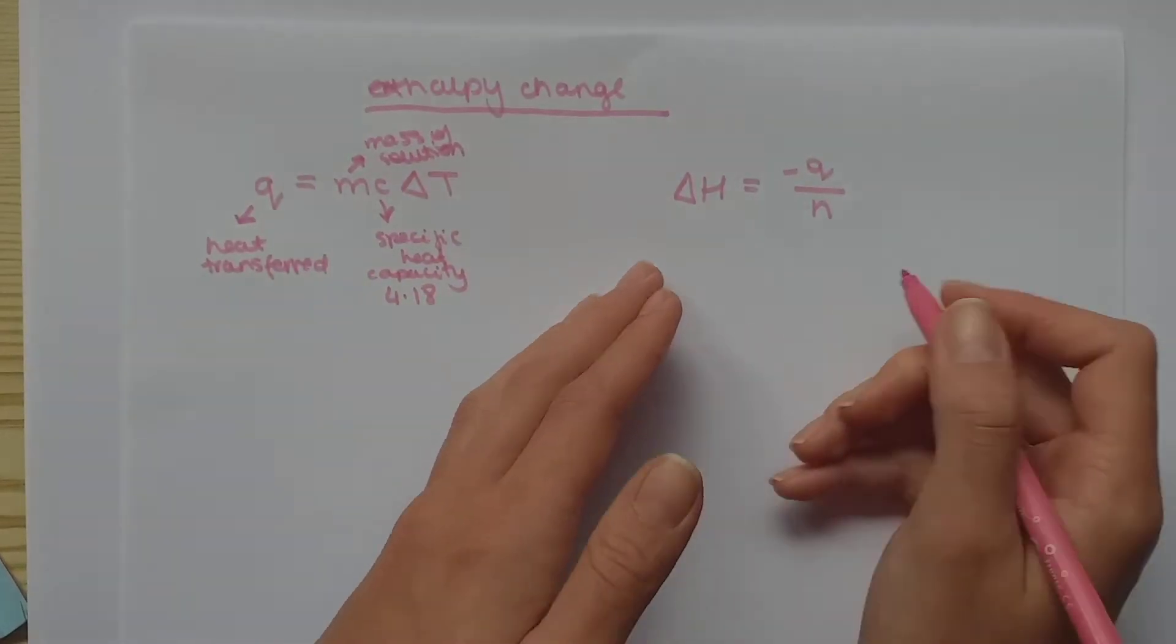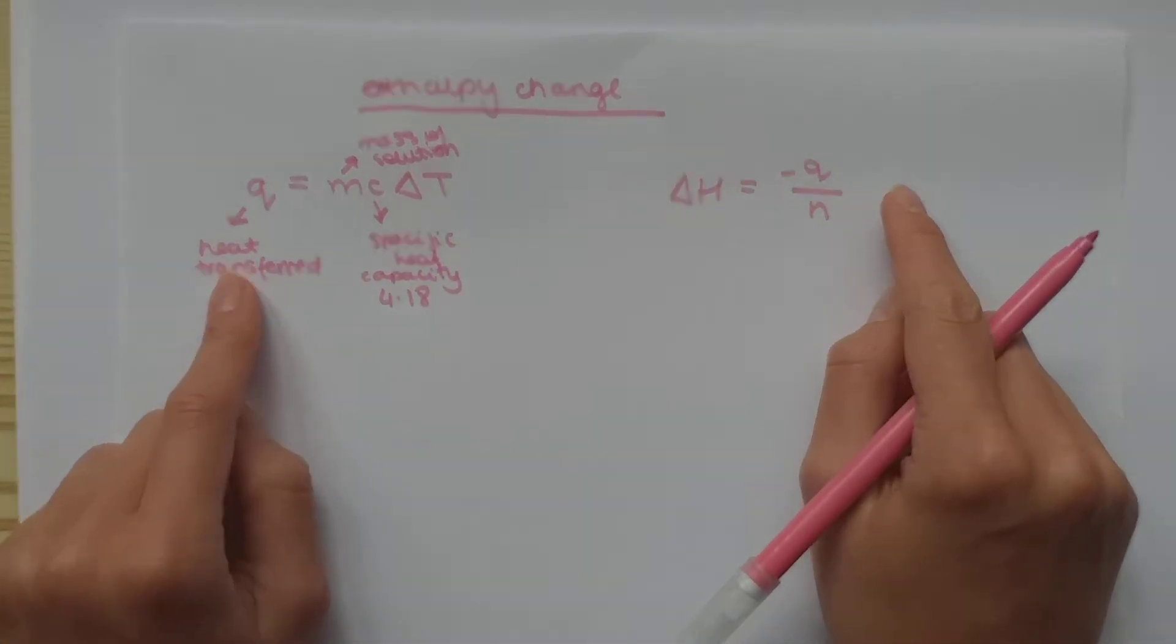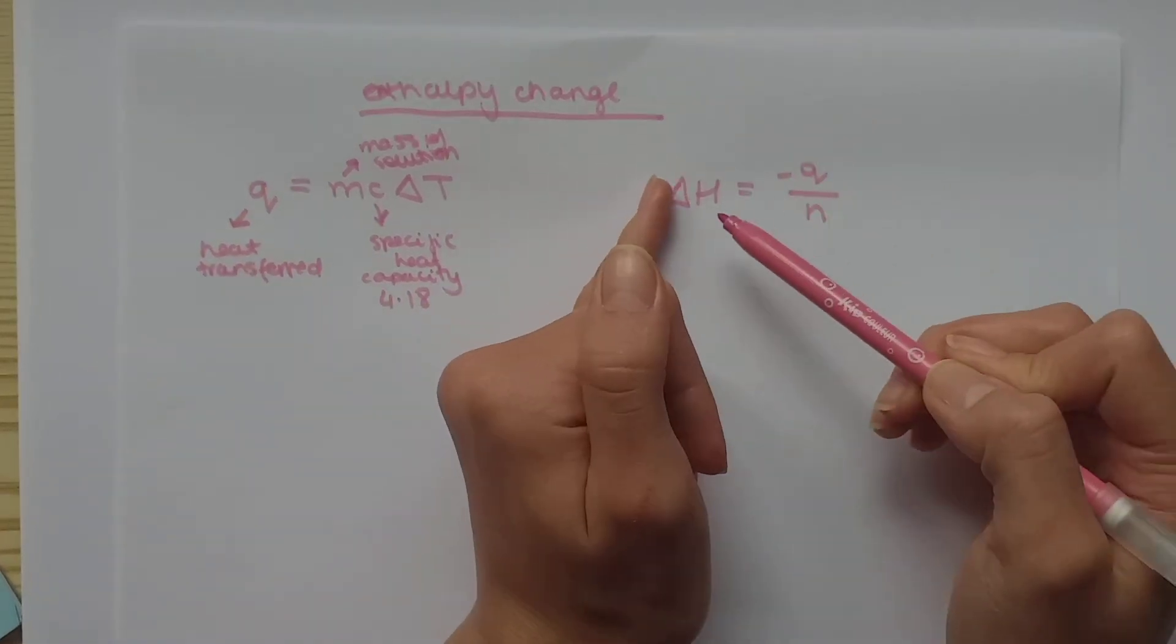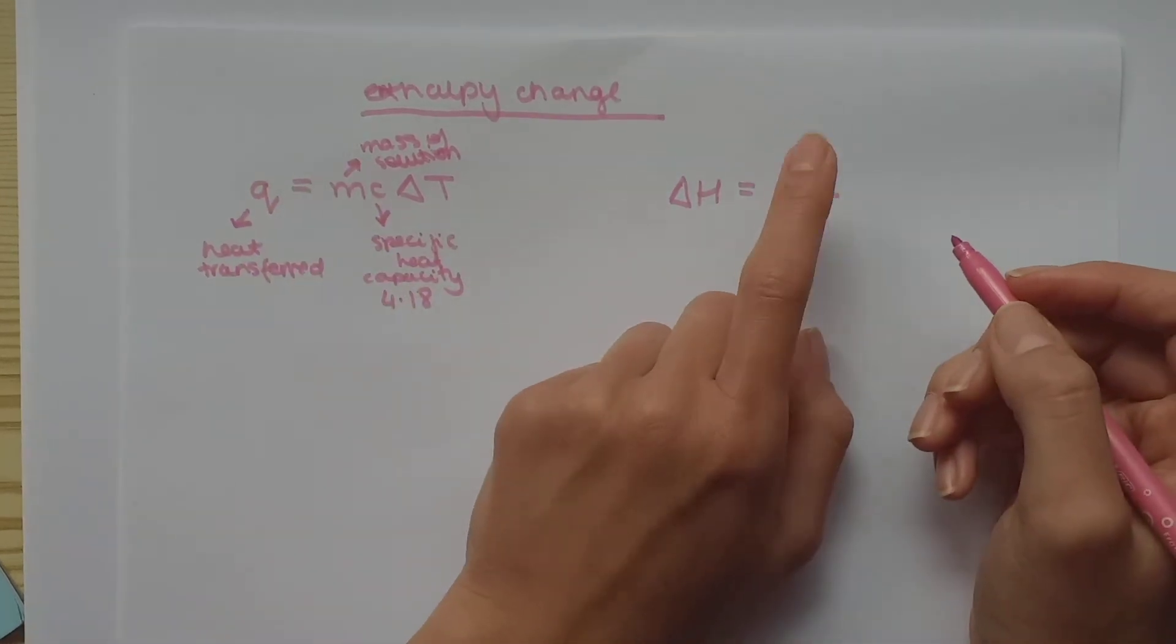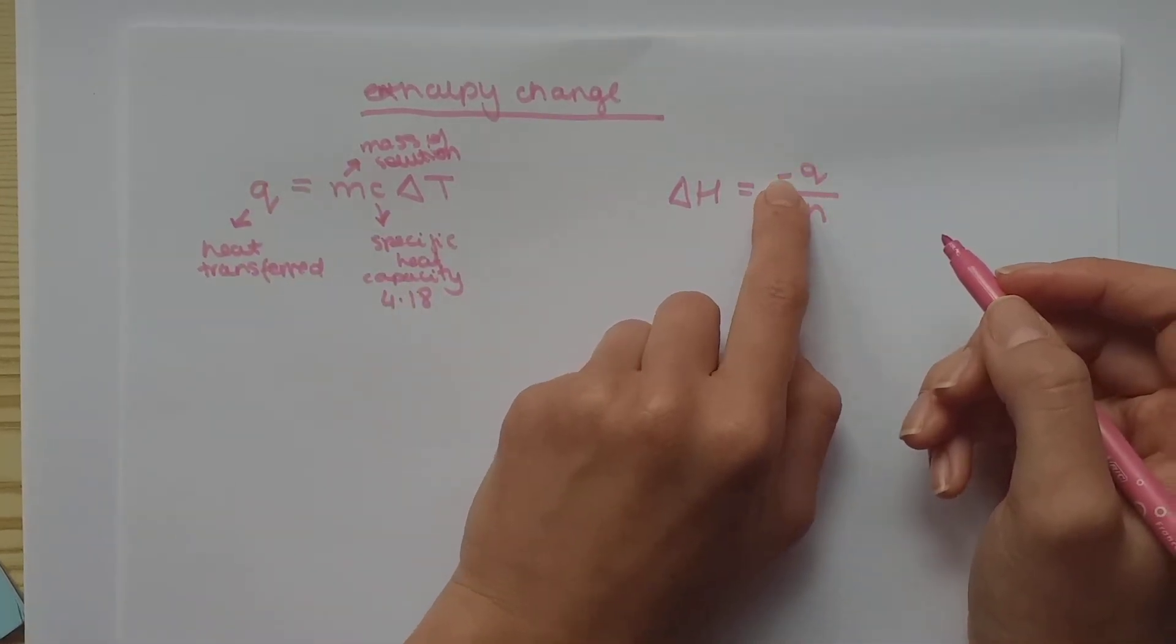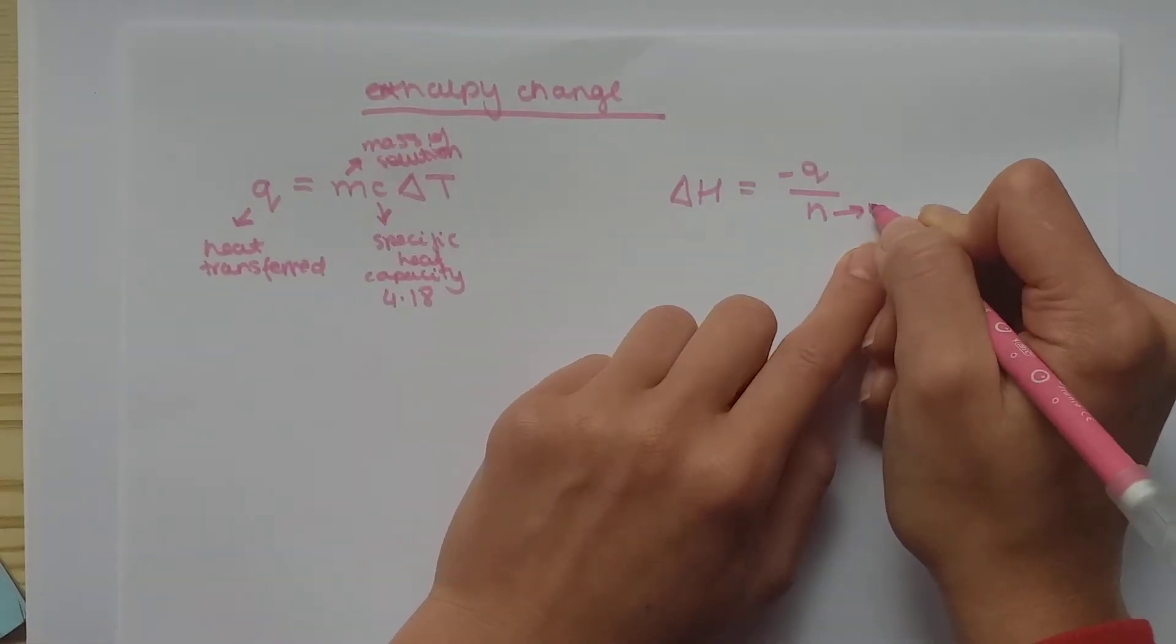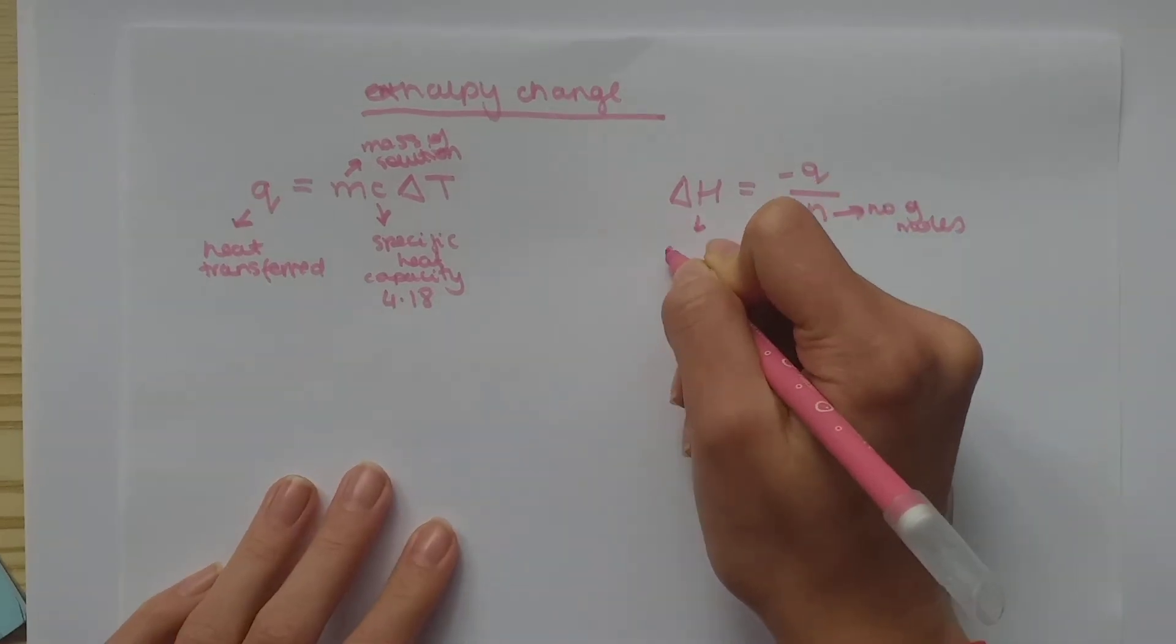And then, as you can see, this equation uses our Q, heat transferred, which we calculated from this. So, in order to find your enthalpy change, you have to do this equation first to get Q. Minus Q is still the heat transferred, but you put a minus in front of the answer you get here. And that's just the number of moles. And that's your enthalpy change.